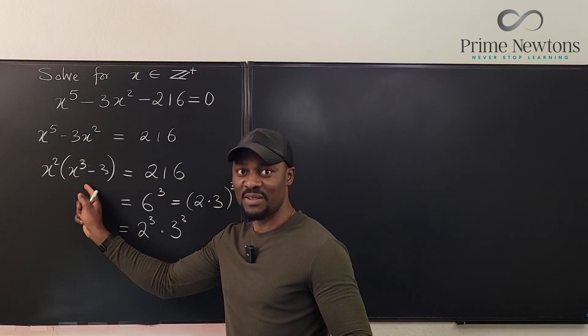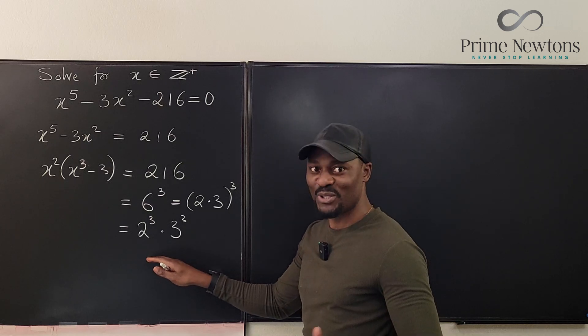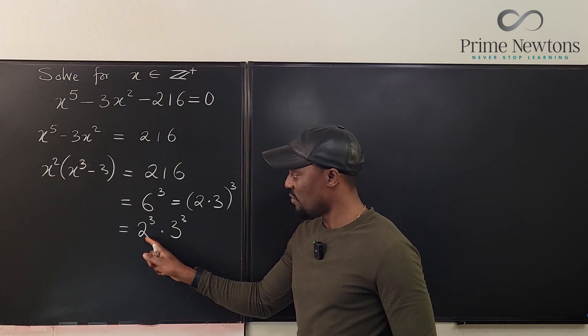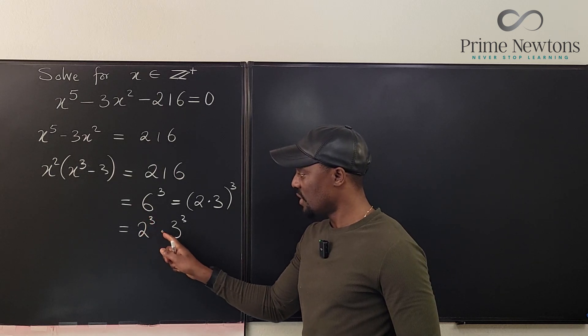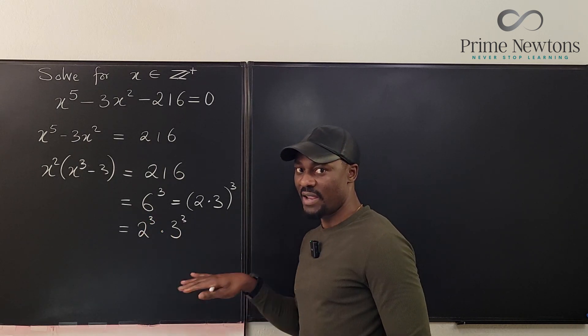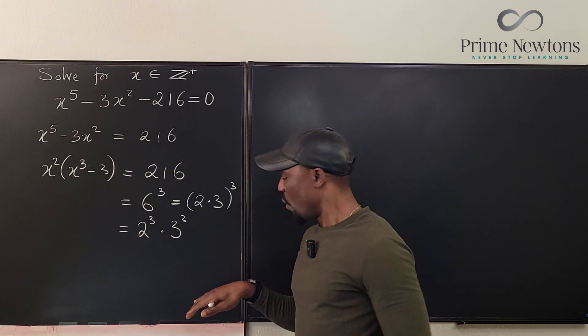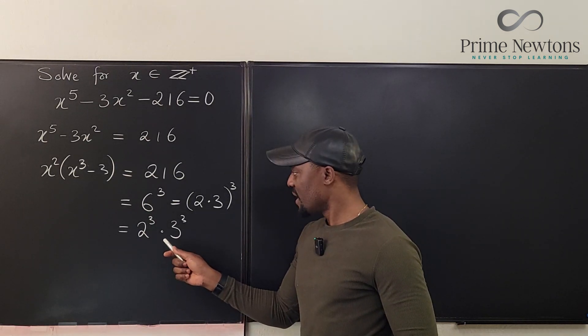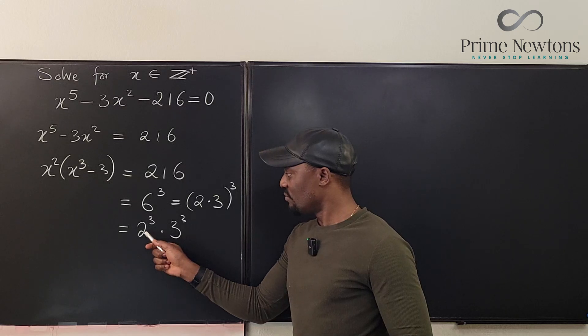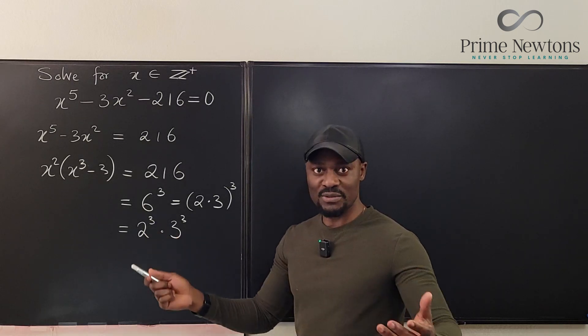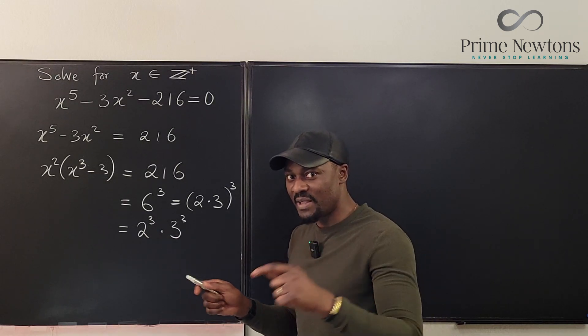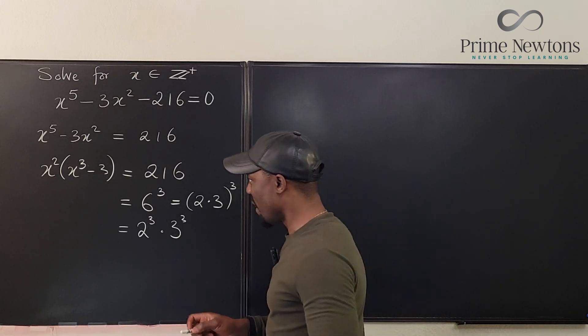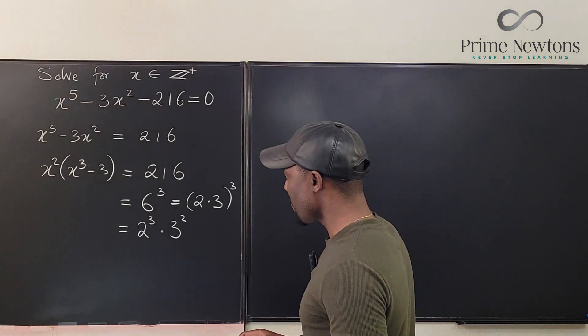But what I want is I want a square multiplying another number, so I might have multiple options. The first square, the smallest square I can generate from here will be 2 squared times 2 times 3 cubed. Or I can do 3 squared, which is going to be 9 times 3 times 2 cubed.